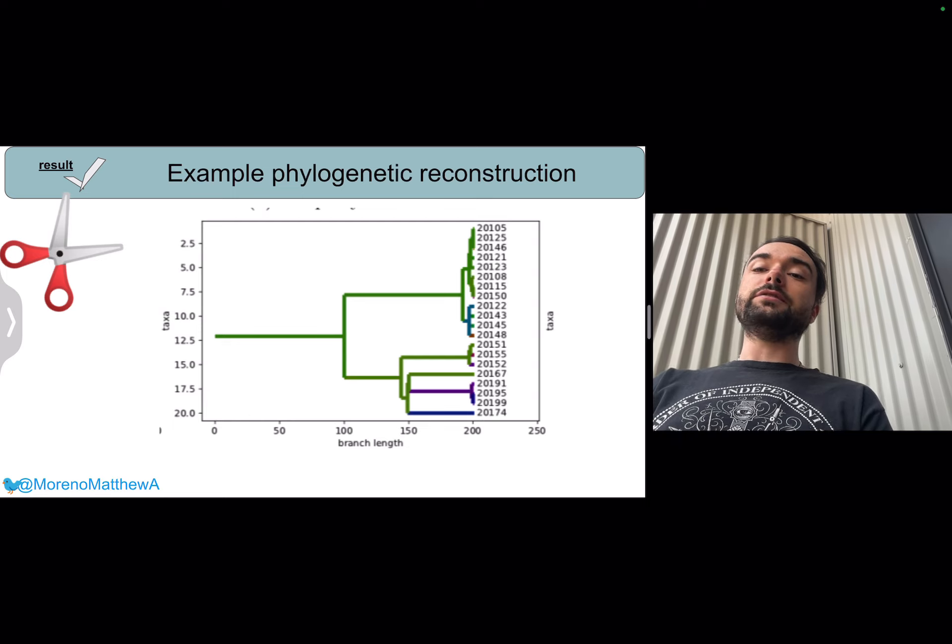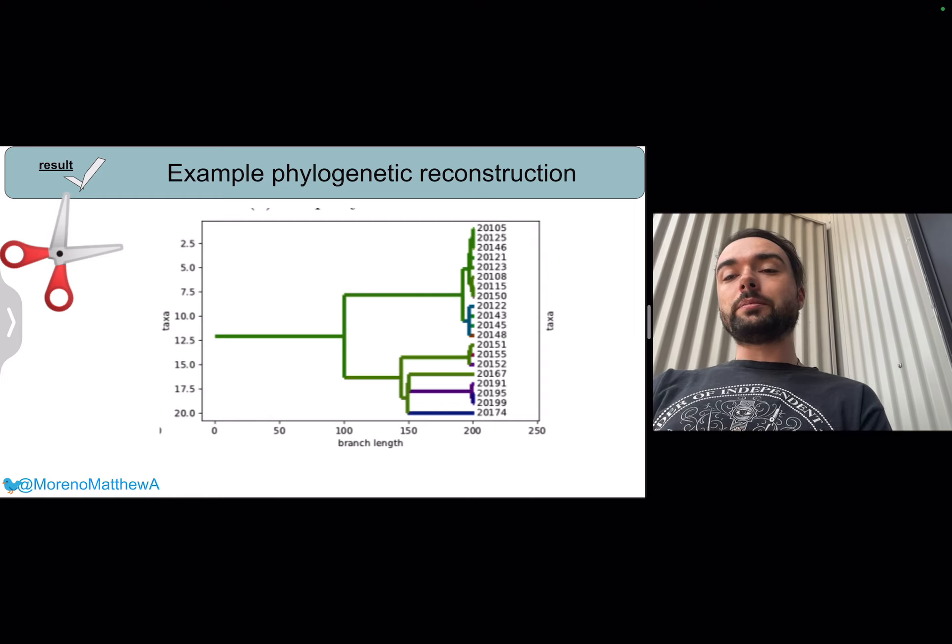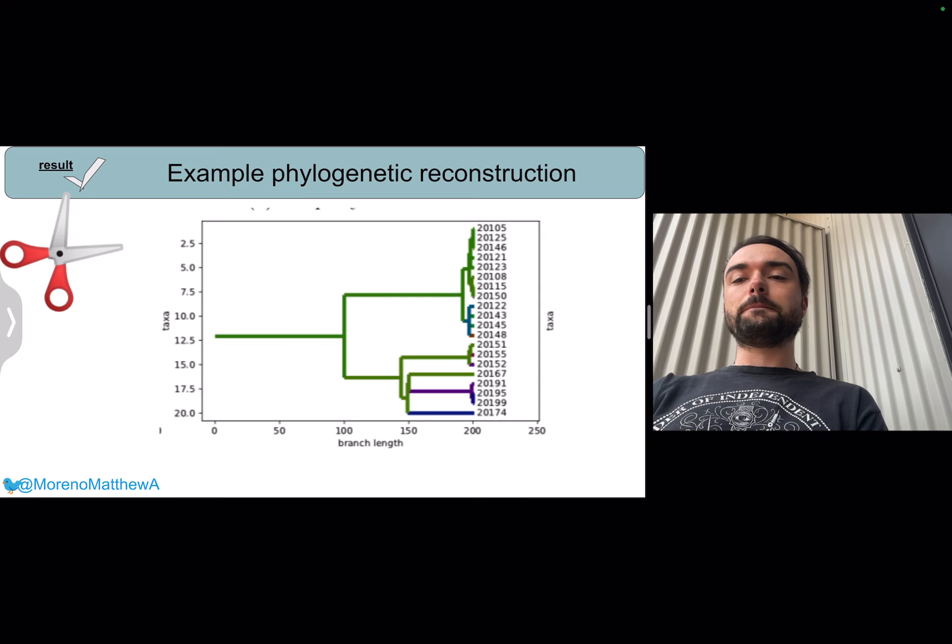Because to make this visualization tractable, we subsampled the leaves that are included here, and so we happen to not include a leaf from that fifth subpopulation, but you can see that secondary split also being reconstructed here.